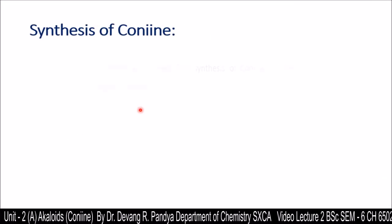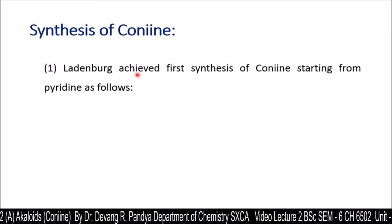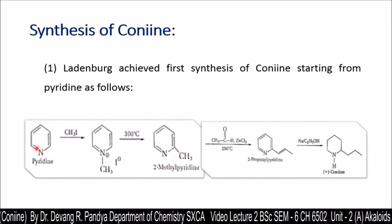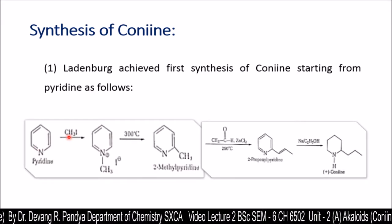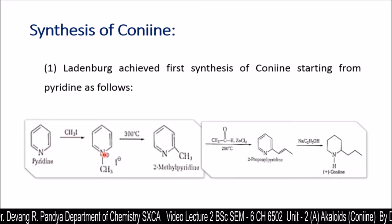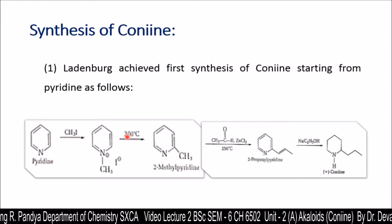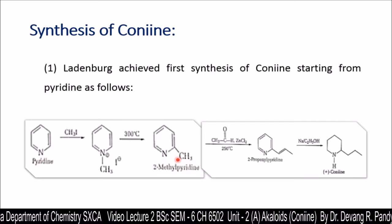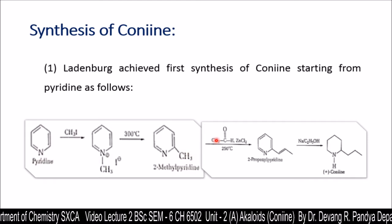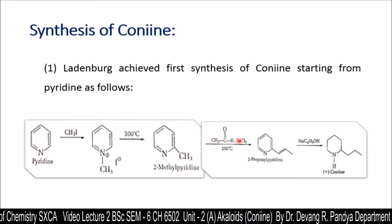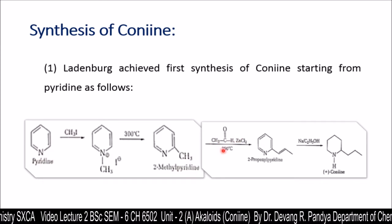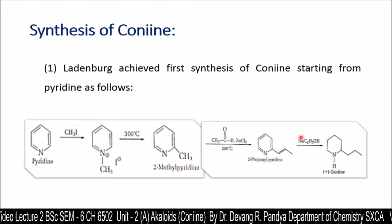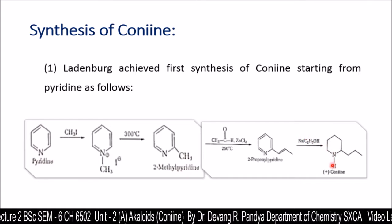Synthesis of conine — two syntheses are discussed. The first is by Ladenburg, who achieved the first synthesis of conine starting from pyridine. Pyridine is first treated with methyl iodide to give a quaternary ammonium salt, which is heated at 300°C to give 2-methylpyridine. This 2-methylpyridine is further treated with acetaldehyde in the presence of zinc chloride at 250°C to give 2-propanyl pyridine. On reduction with sodium and ethanol, we get conine.